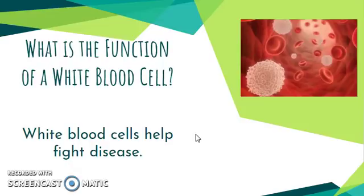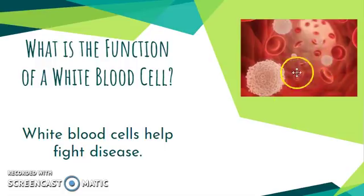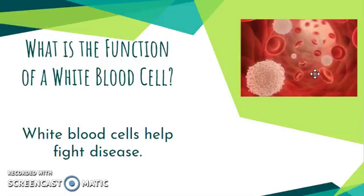White blood cells also float through your bloodstream, but they have a different job. Their specific job is when they see a pathogen — something that shouldn't be in your blood, a foreign invader like a virus or bacteria that could make you sick or harm you — they will attack it and attempt to keep you healthy. Another way to maintain homeostasis is that your white blood cells will help fight disease.